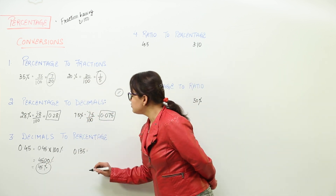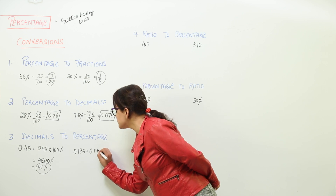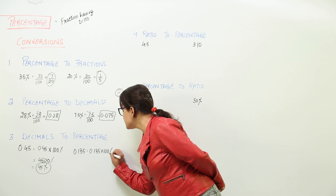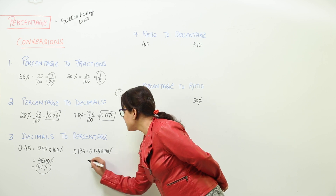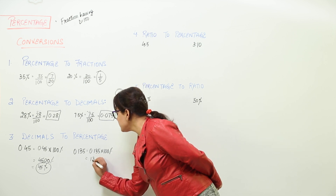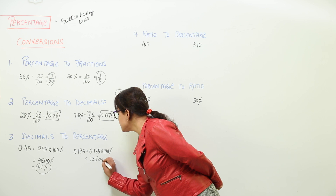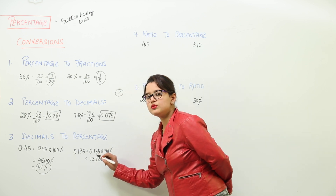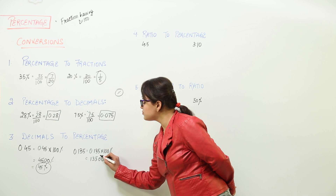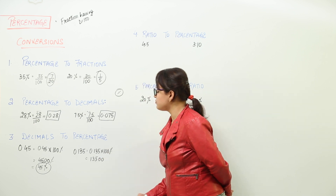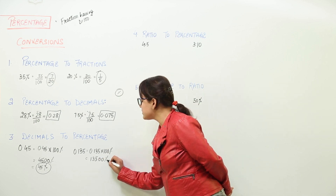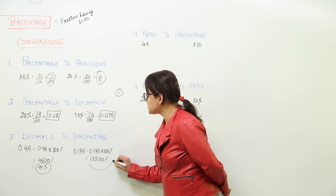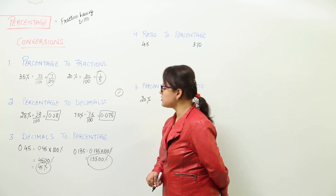Here also we multiply the decimal 0.135 with 100 percent. By doing this we get 135 with two zeros, and three decimal places are to be placed. Counting 1, 2, 3 and placing the decimal point with a percentage sign gives us 13.5 percent.